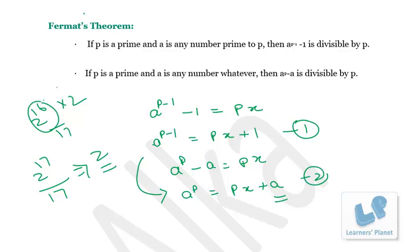For example, you cannot take the combination of 3 and 15 because 3 and 15 are not co-prime — 15 is a multiple of 3. So when you have a prime number and another number that is co-prime to that prime, then you can use Fermat's theorem.